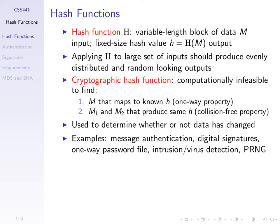Another property: it should be hard for someone to find two different messages M1 and M2 that produce the same hash value. Hash of M1 gives some hash value x, hash of different M2 produces the same hash value x. We don't want collisions - a collision is when two different messages map to the same value. So we'd like the collision-free property. We'll split these into three properties later, but generally: one-way and no collisions.